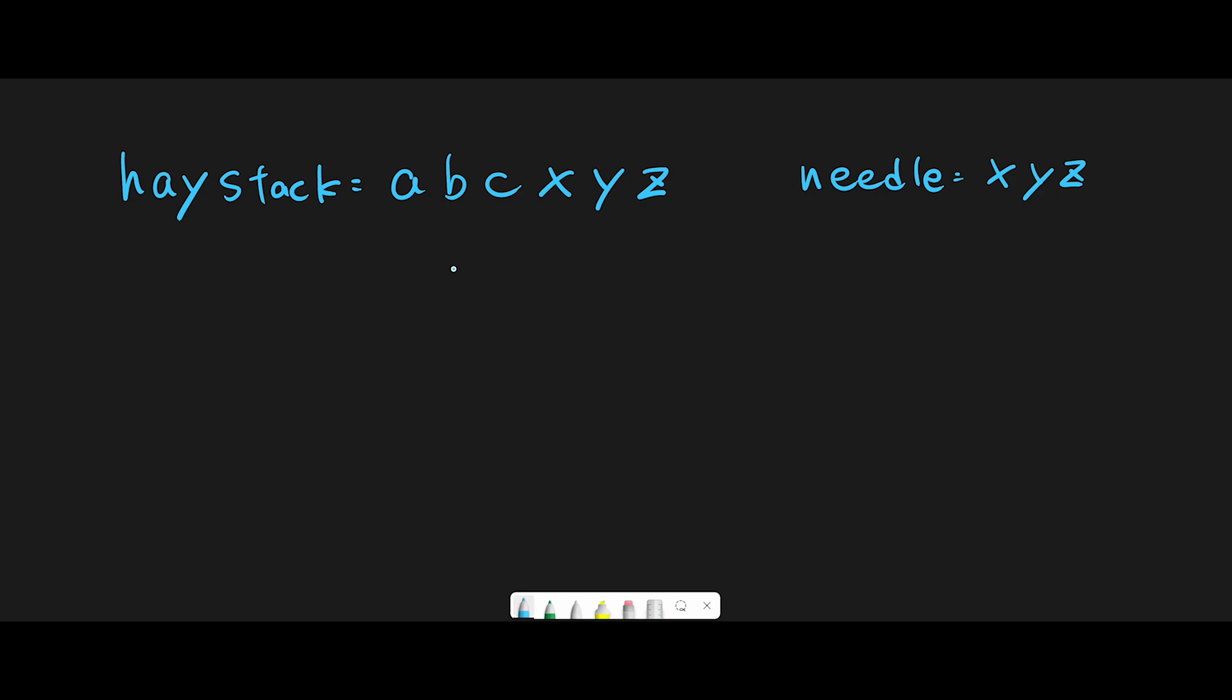But the problem is we don't know where to start, so we iterate through all characters one by one. We start from index 0. The needle is 'xyz' which has a length of 3, so that's why every time we check current index plus 3.